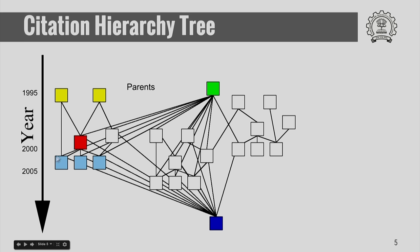Now look at the articles below. These colored articles were published after 2000 — maybe at 2005, 2010, and so on. These articles used the red article as part of their references. Since these came after the red article and are dependent on it, we may call them children.